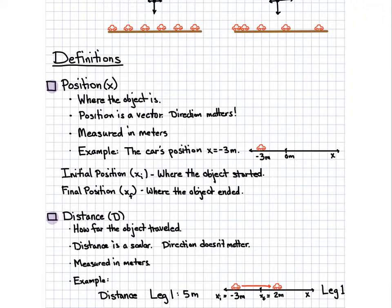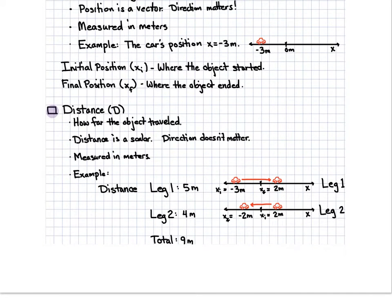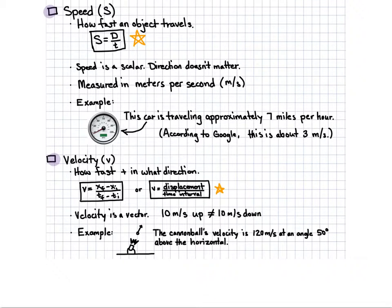Distance — how far the object has traveled. Direction doesn't matter for distance, so if you go this way or that way it's still just a number. Example: let's say you had two legs. You start at negative three, you go to two — that's a distance of five meters. And then you start at that two and go back to negative two — that's a distance of four meters. Total distance traveled is nine meters.